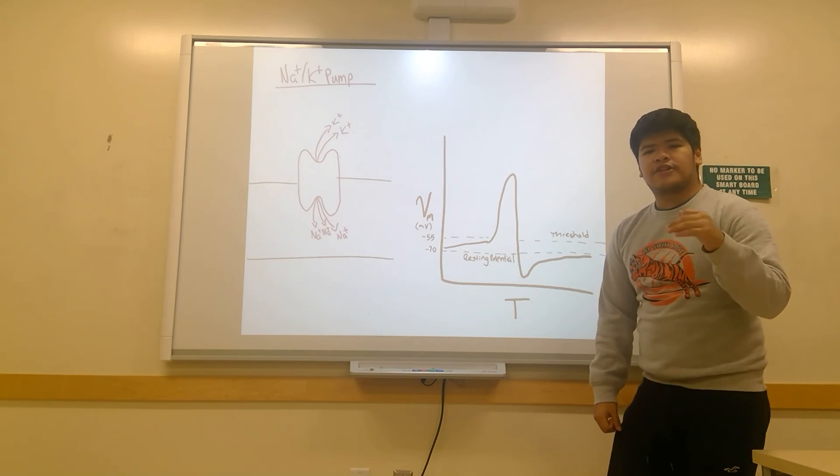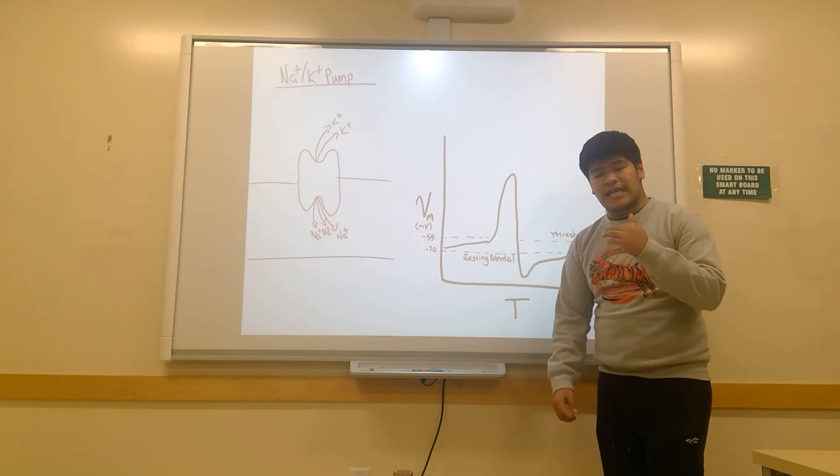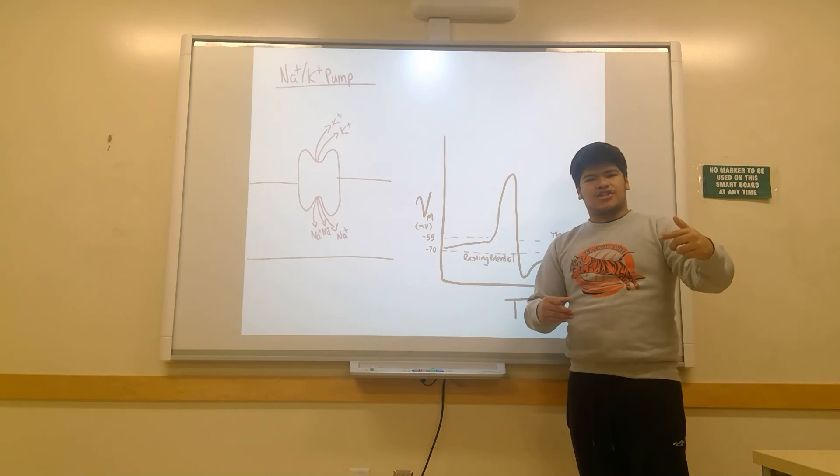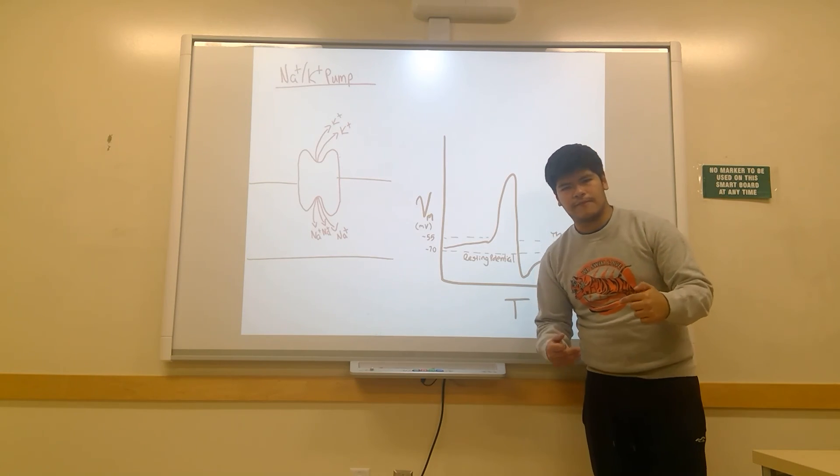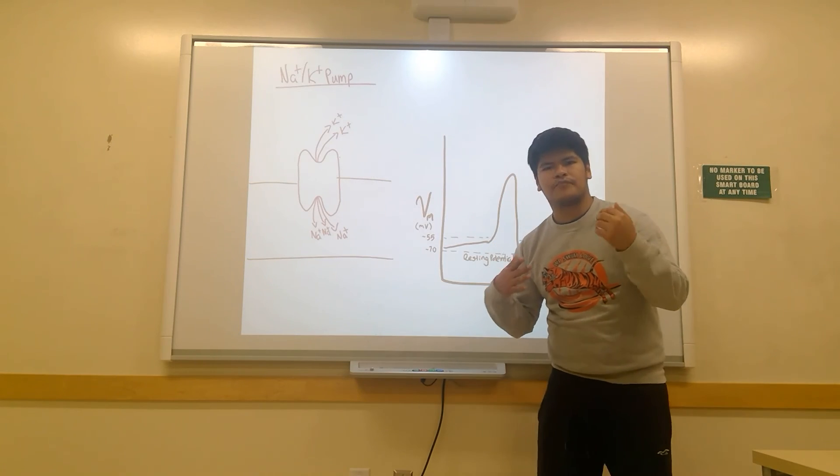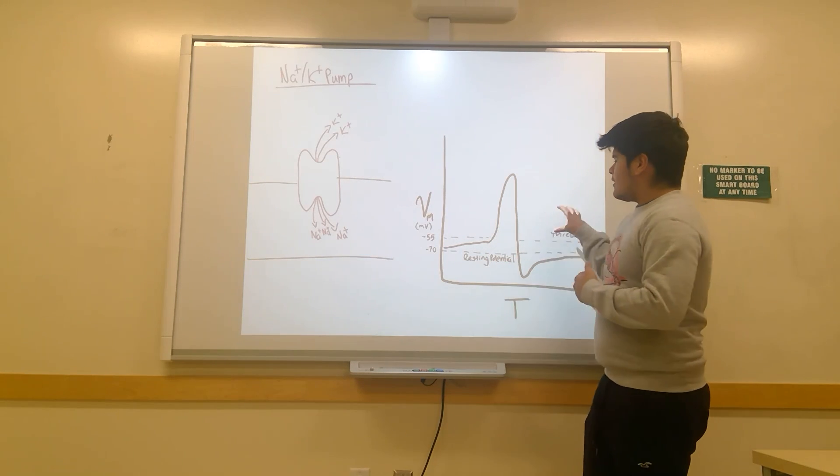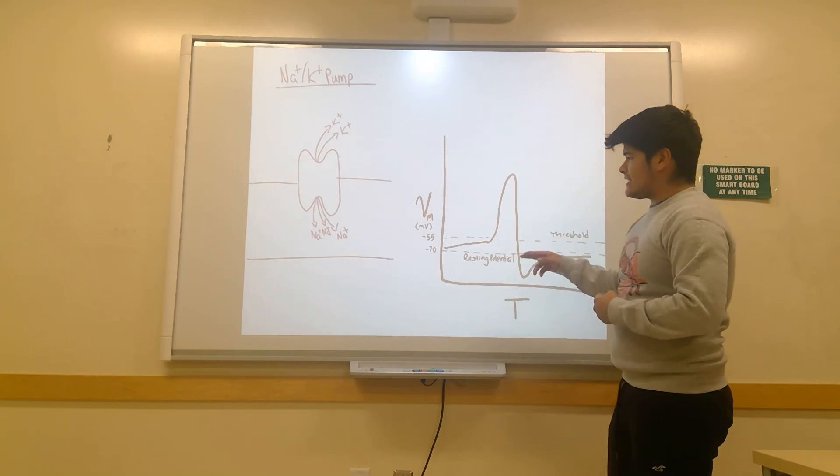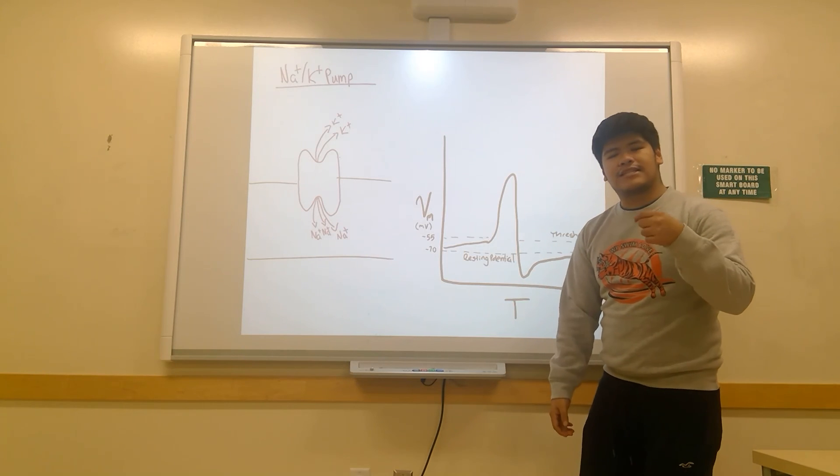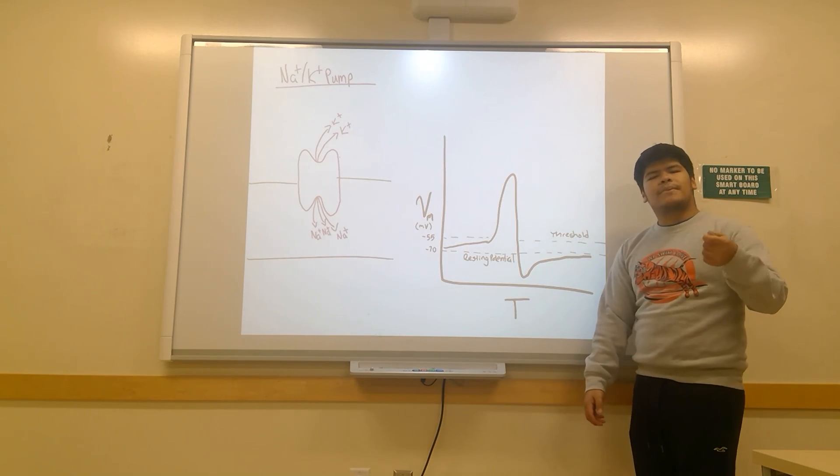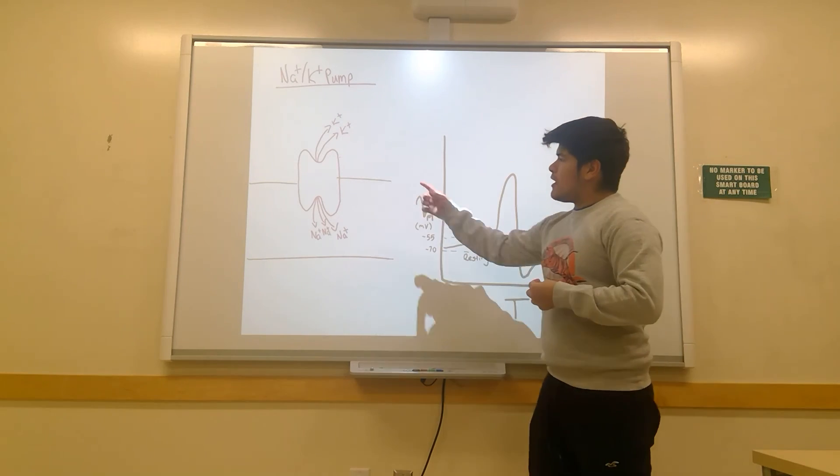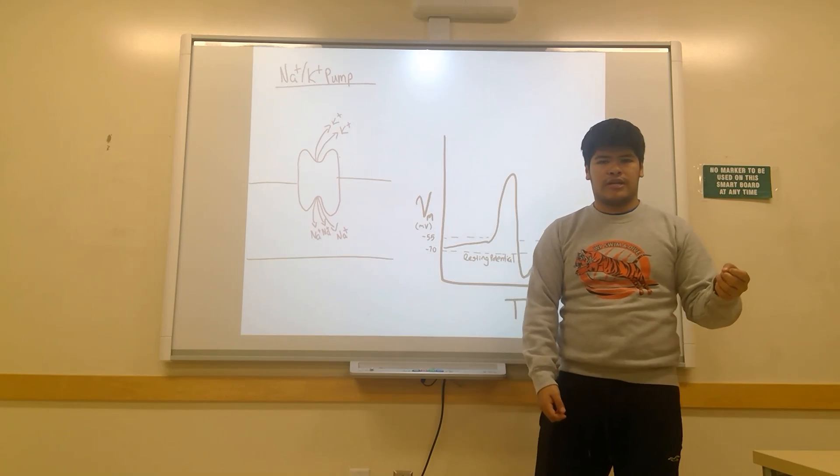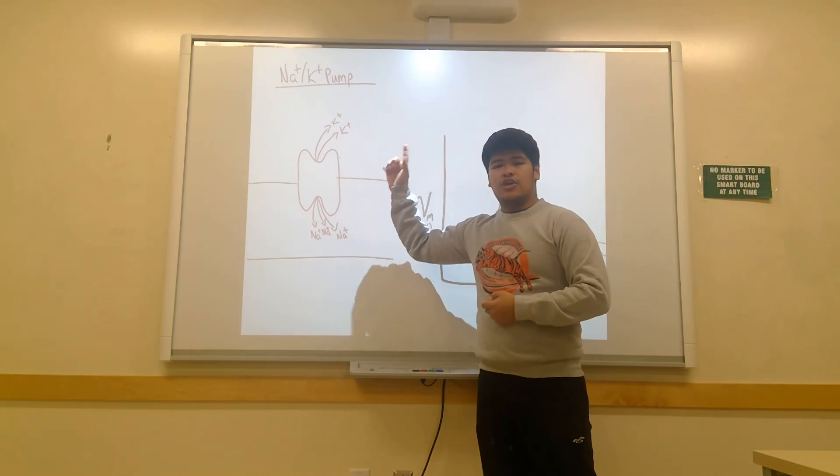This allows for the ion concentration within a neuron, as well as outside of the neuron, to be restored so that another action potential can be fired, and therefore cause for an influx of sodium and an outflux of potassium. This restoration takes time. Not only does it take time, but it also takes energy because these pumps are trying to move these ions against their concentration gradient. This is why these pumps use ATP.